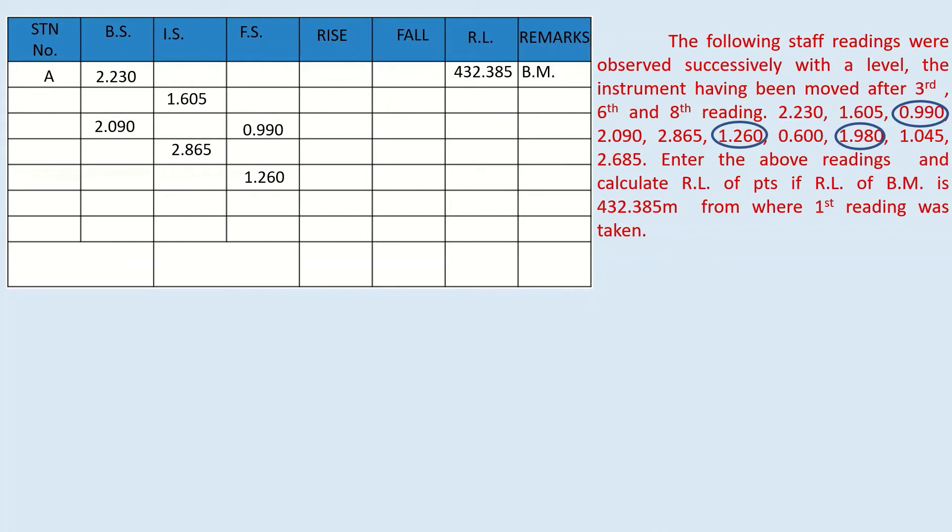Then 1.260 is taken after which the instrument is shifted. Hence it is a foresight. To proceed leveling further, back side 0.6 is taken at the same station. After 1.980, instrument is shifted. Hence it is a foresight. As explained earlier, 1.045 is a back side again. While 2.685 is our last reading which is a foresight as leveling must always be closed at foresight.